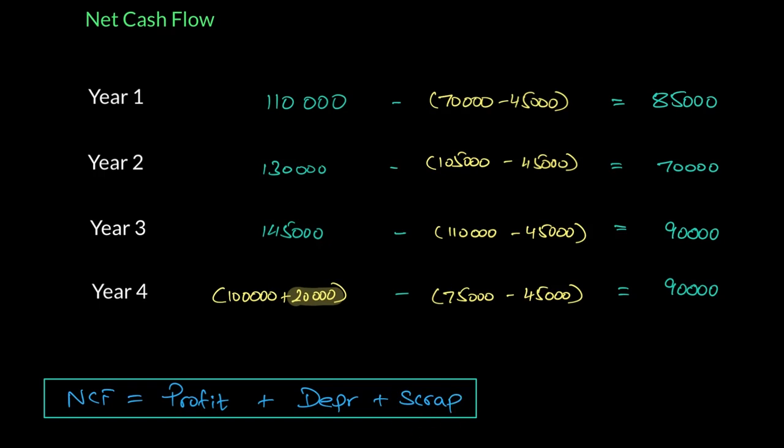So if you have to directly calculate net cash flow, you can use this equation profit plus depreciation plus scrap. And if you're looking to calculate profit, just rearrange this equation, which will become net cash flow minus depreciation minus scrap to arrive at the profit figure.